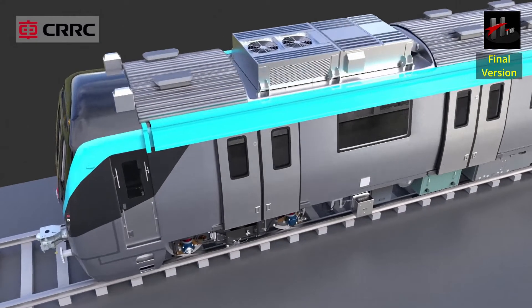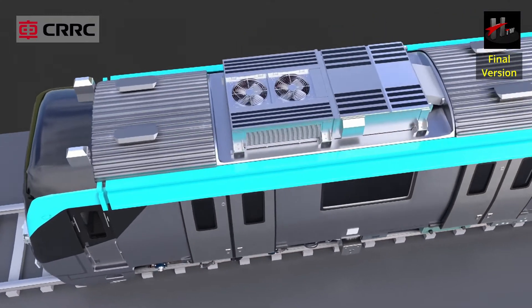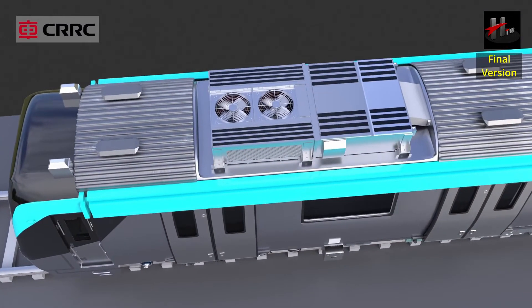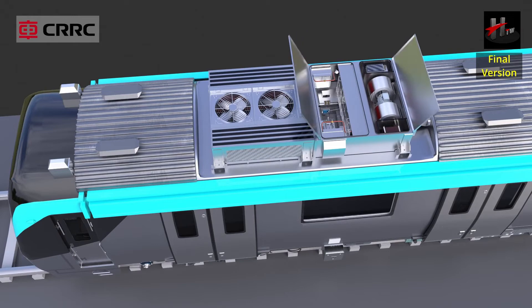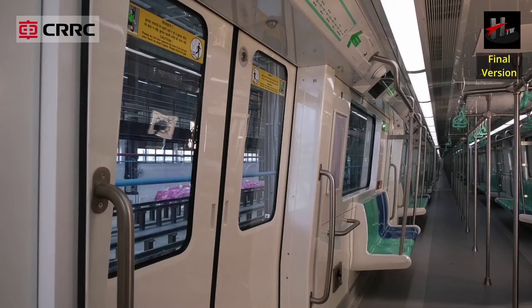Let us now take a look at the air flow in the heat mode. The air conditioner operates in the heat mode during the winter months when the ambient temperature is too low to ensure a comfortable temperature in the saloon.